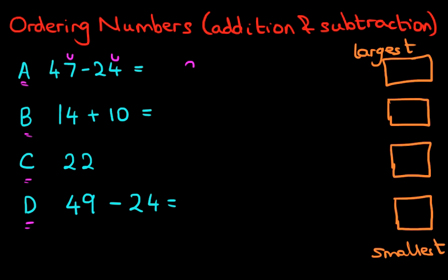7 minus 4 is 3. And now we do the tens. I'm just going to put arrows here. 4 minus 2 is 2. There we have it. So the answer to A is 23.